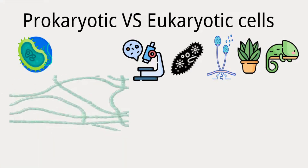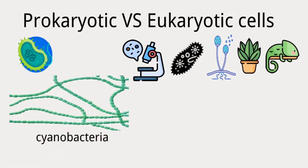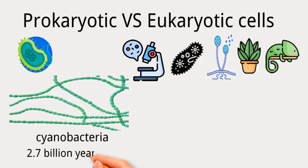Prokaryotic cells, like cyanobacteria, likely existed around 2.7 billion years ago, as evidenced by ancient rocks containing their fossils and specific organic molecules. Cyanobacteria played a role in producing oxygen in the atmosphere around 2.4 billion years ago.